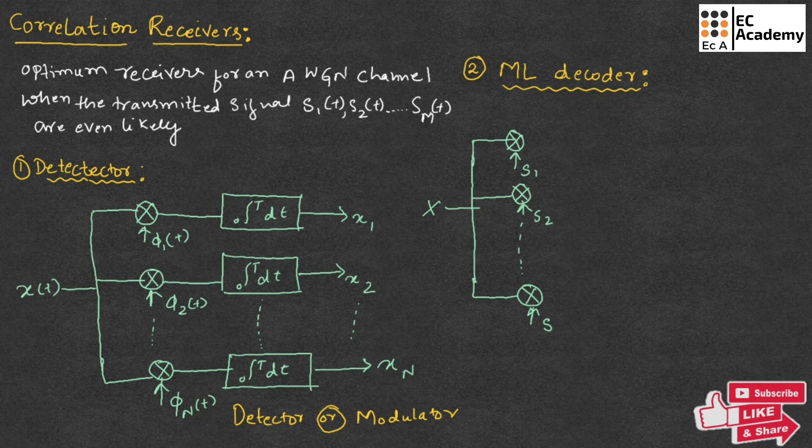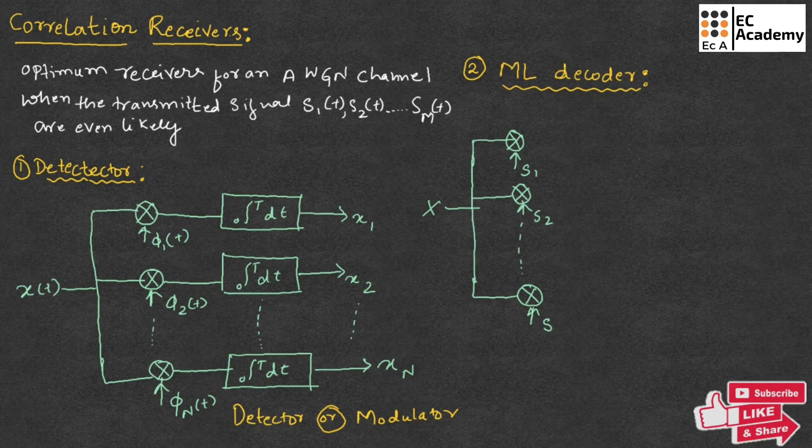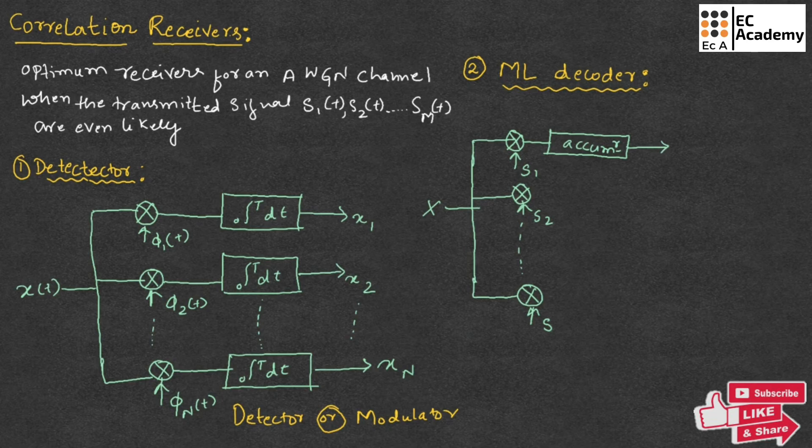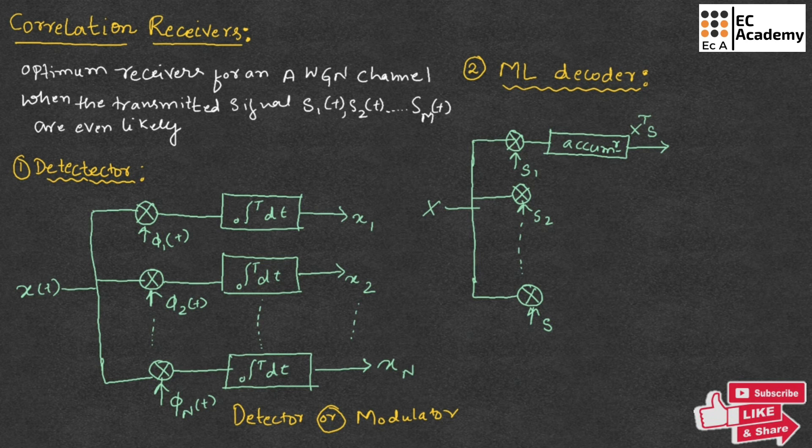The resulting product are successfully summed using the accumulator to form the corresponding set of inner product, which is X to the power of T, S, K. So since it is with the first accumulator and signal vector, so we will write this as S1.